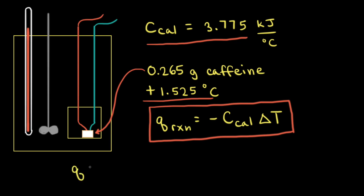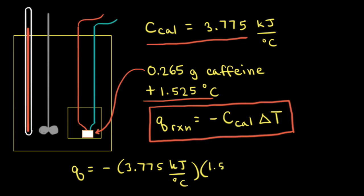So to calculate Q: Q is equal to the negative of the heat capacity of the calorimeter, which is 3.775 kilojoules per degree Celsius, multiplied by the temperature change of 1.525 degrees Celsius. Degrees Celsius cancels out, and this gives us negative 5.757 kilojoules.